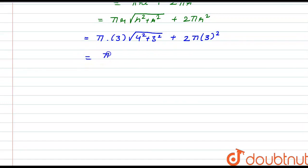This comes out to be π × 3 × √(16 + 9) = π × 3 × 5 plus 2π × 9. This equals 15π plus 18π.